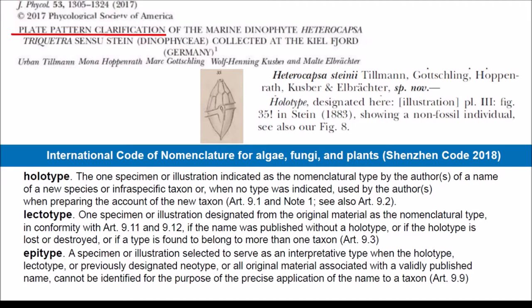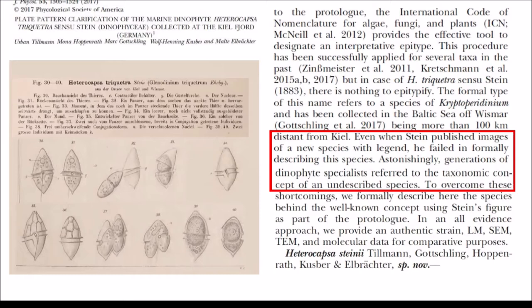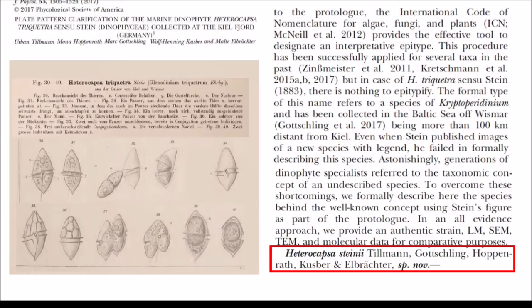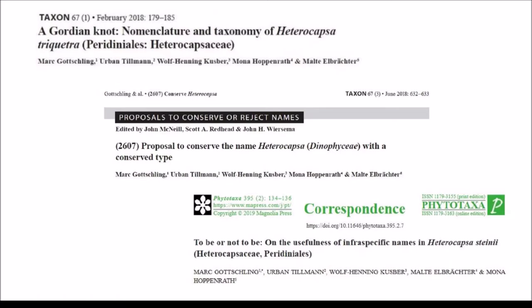Some German researchers have access to the unpublished illustrations by Ehrenberg and they began a series of papers. They proposed a new species, Ethelokapsa steinae, for one of the illustrations of Ethelokapsa tricheta by Stein. This author also considered that Stein never formally described Ethelokapsa tricheta. However, the species Ethelokapsa tricheta, according to Stein, was already described in the same place with the name Peridinium monas.